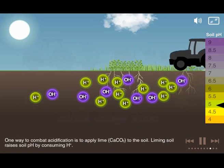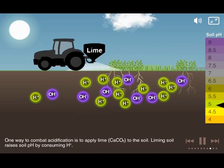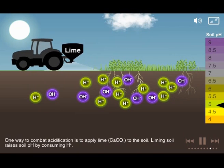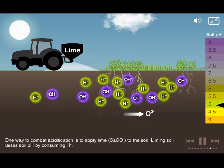One way to combat acidification is to apply lime to the soil. Liming soil raises soil pH by consuming hydrogen ions.